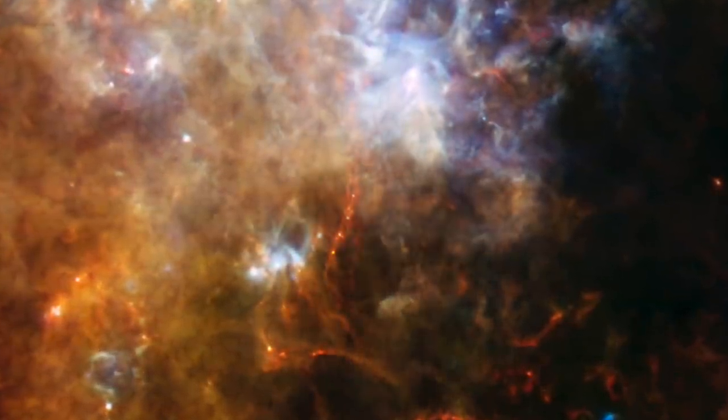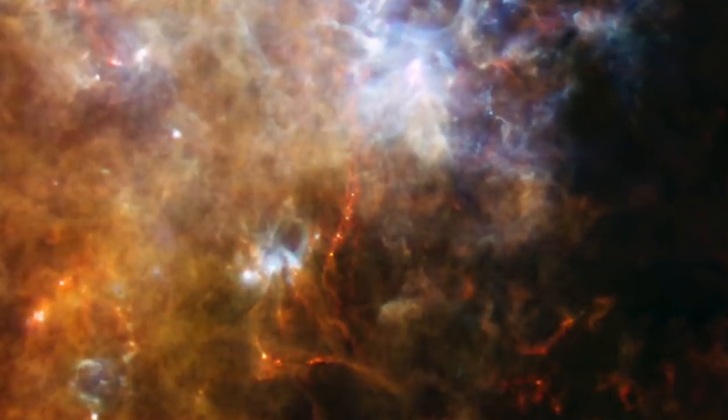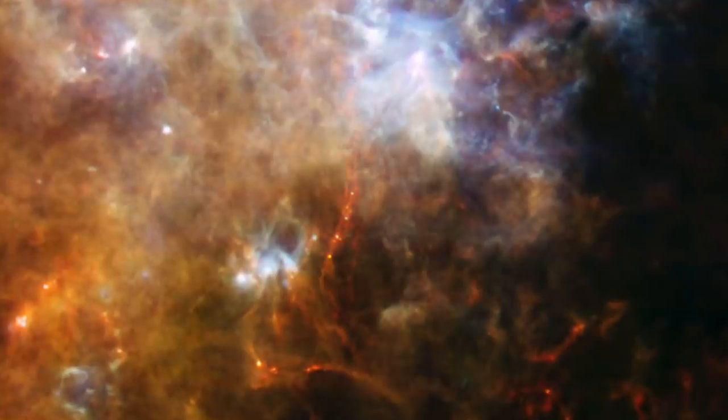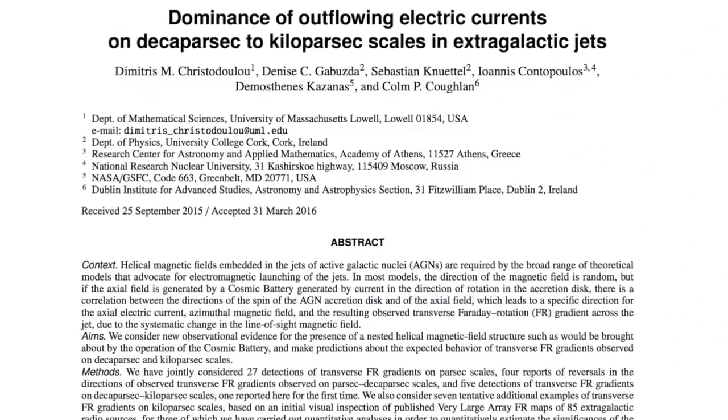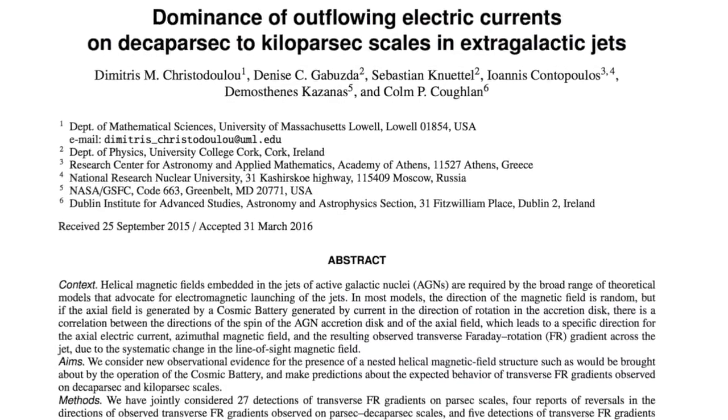Alfvén's outrageous prediction that stars form like beads on a string along vast networks of filaments is one of many such predictions confirmed by space discovery. The evidence for cosmic electric currents on an even much vaster scale has grown increasingly undeniable.